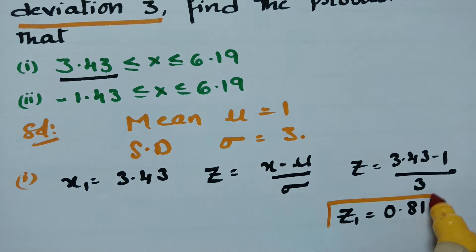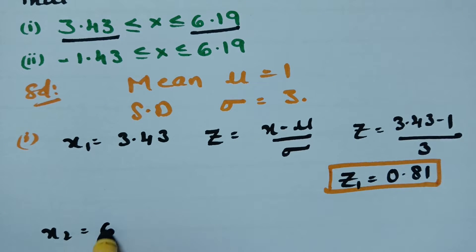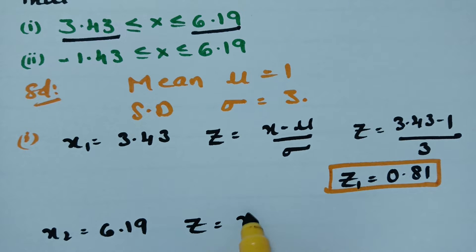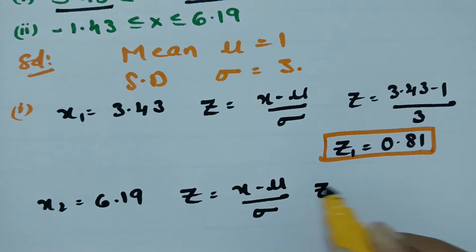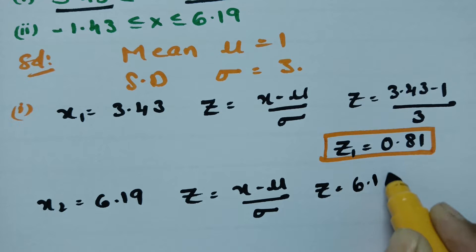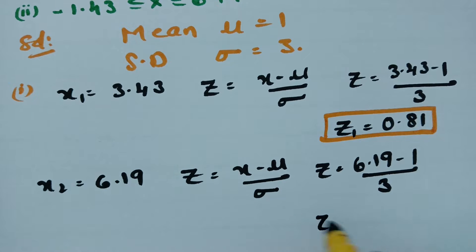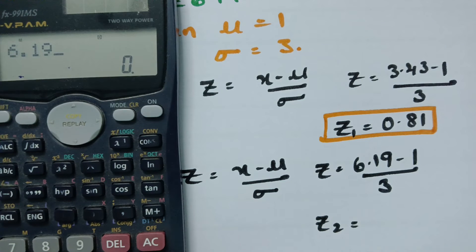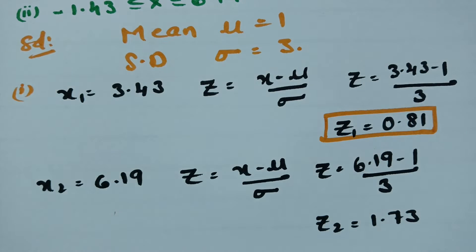Next, when x2 is equal to 6.19, using the same formula z = (x − mu) / sigma, substituting x = 6.19, mu = 1, and sigma = 3, we get z = (6.19 − 1) / 3 = 1.73. So x2 = 6.19 gives us z2 = 1.73.